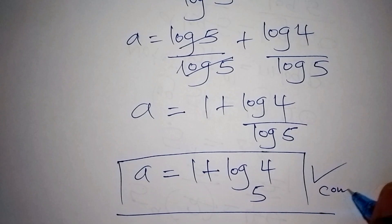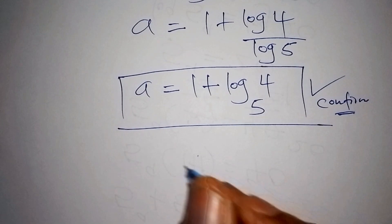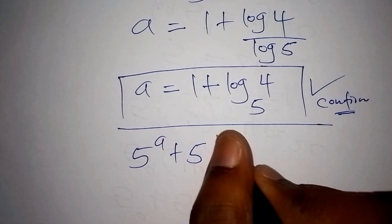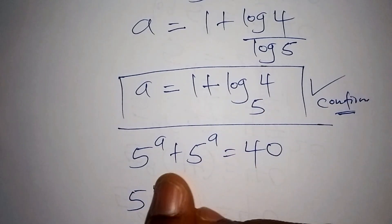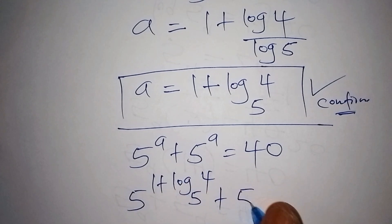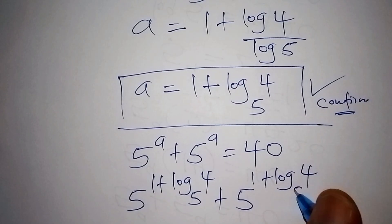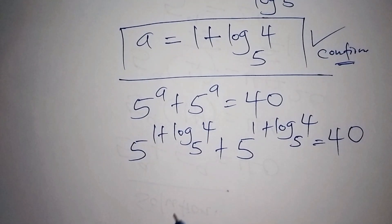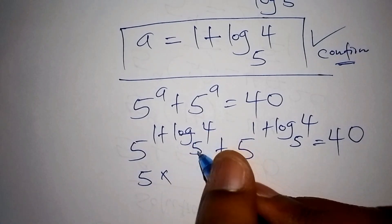We can confirm this very fast by checking. Our original problem is 5 to the power of a plus 5 to the power of a equals 40. Substituting a equals 1 plus log base 5 of 4, we get 5 to the power of (1 plus log base 5 of 4) plus 5 to the power of (1 plus log base 5 of 4) equals 40. Using exponent rules, 5 to the power of 1 is 5, and the plus becomes multiplication.